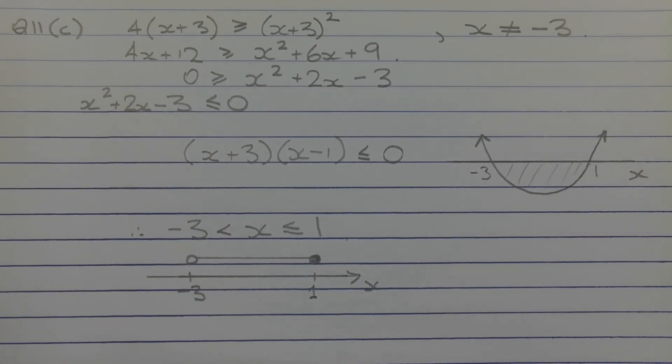hand side, and that's easy enough to factorize. We get (x plus 3)(x minus 1) less than or equal to zero. That's why we have x-intercepts at negative 3 and positive 1.